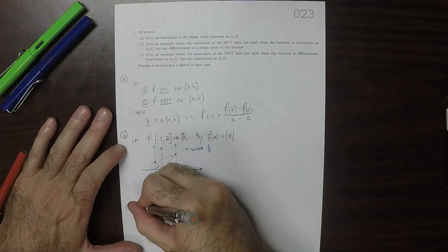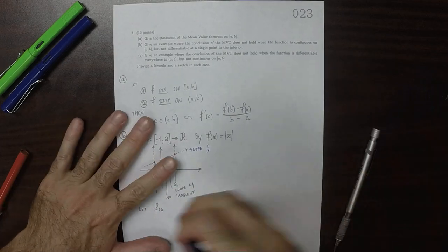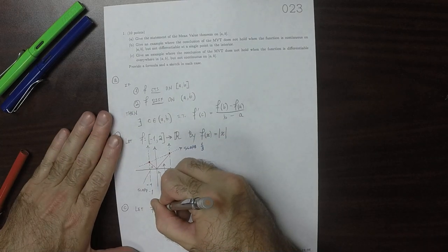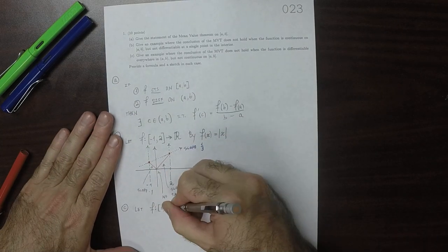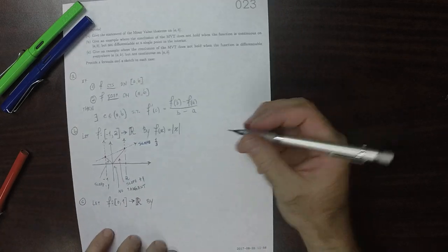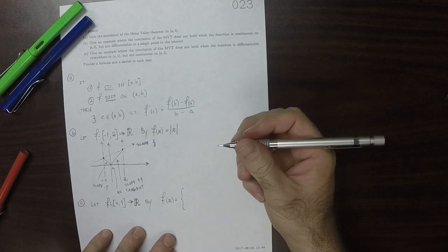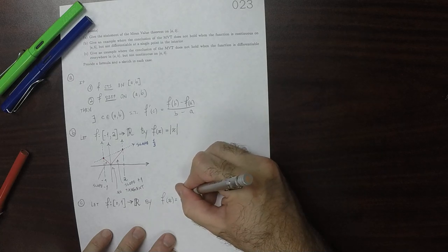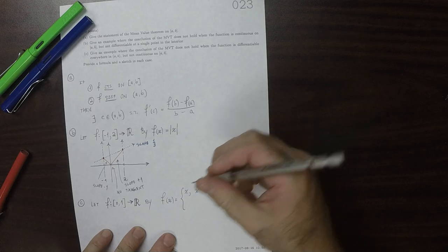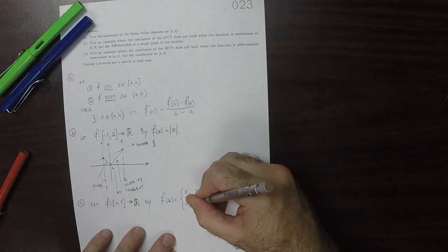So let f of x, let f from the unit interval closed and bounded to the reals be given by... Let's say f of x is x if x is less than 1 and it is 0 otherwise.